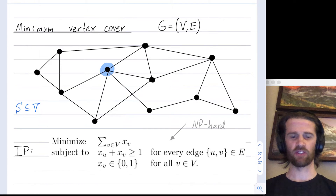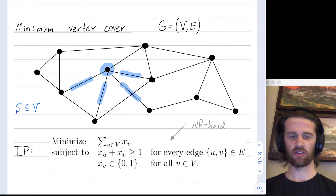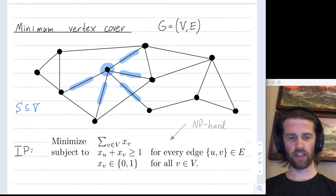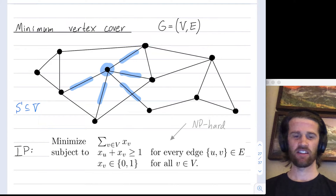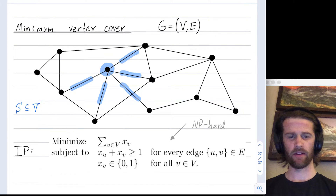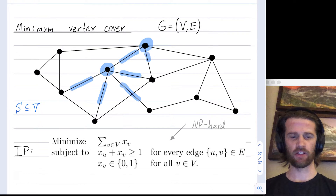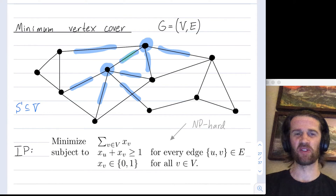Let's say I take this first vertex. That means all of the adjacent edges are handled, so I'm going to cross out those edges. This edge has not been covered, so I need to choose one of the two vertices — why don't we choose the top one? Let's add this vertex to our set S. That covers this edge, this edge, and this edge. This edge is handled twice, but we just need every edge handled at least once.